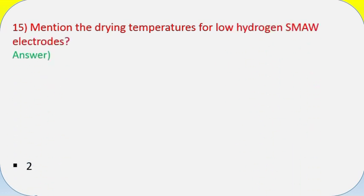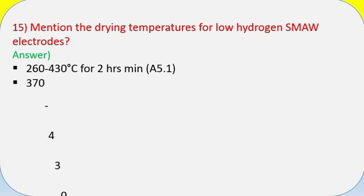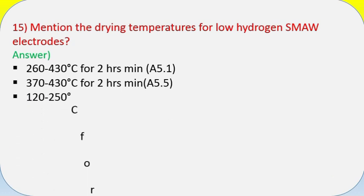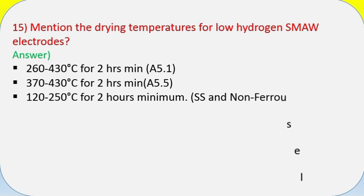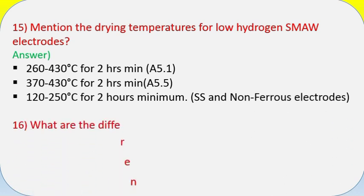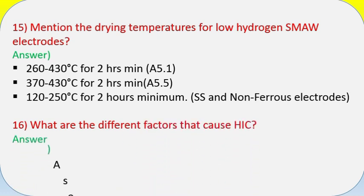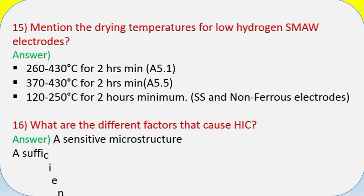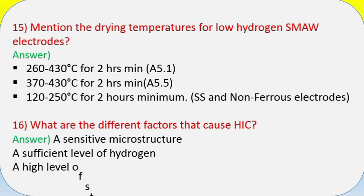Question 15: Mention the drying temperatures for low hydrogen electrodes. Answer: 260–430°C for 2 hrs minimum (A5.1); 370–430°C for 2 hrs minimum (A5.5); 120–250°C for 2 hours minimum for SS and non-ferrous electrodes.